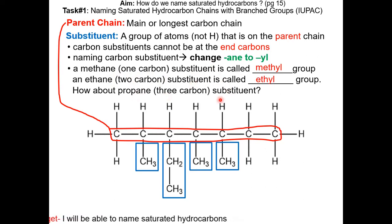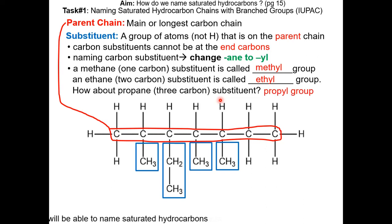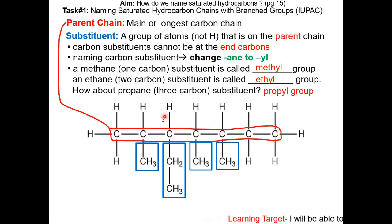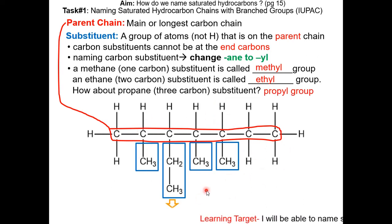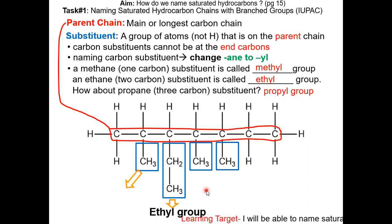How about a propane substituent? It is called a propyl group. So in this molecule, there is 1 ethyl group and 3 methyl groups.